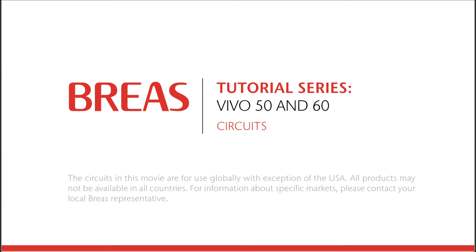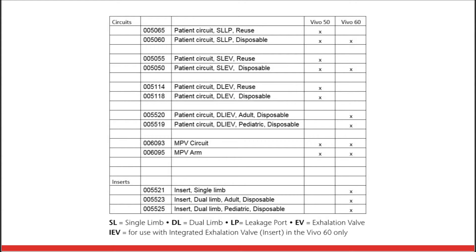The Vivo50 and Vivo60 ventilators come with many different circuits to give you the opportunity to find the perfect circuit for the individual patient. Circuits are available as reusable and disposable, single limb and dual limb with leakage port and exhalation valve.